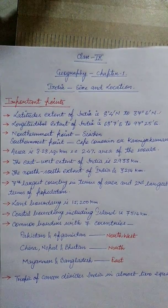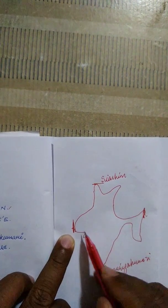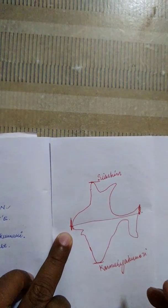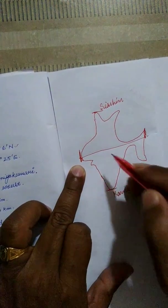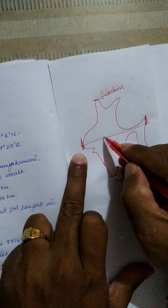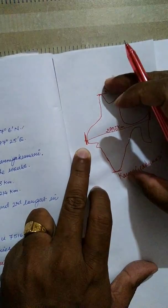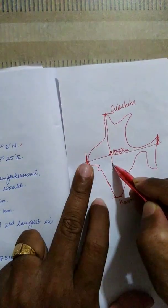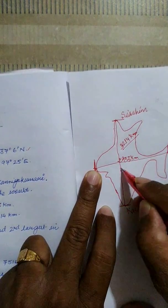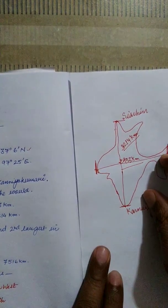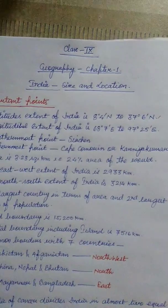The next important point is the east-west extent of India. The easternmost and westernmost points of India are 2,933 km apart. The distance between the northernmost and southernmost point of India is 3,214 km — these are very important points you will have to remember. India is the seventh largest country in terms of area and the second largest country in terms of population.